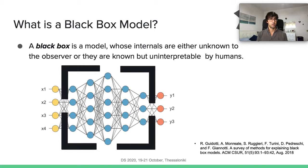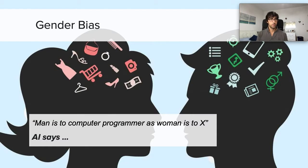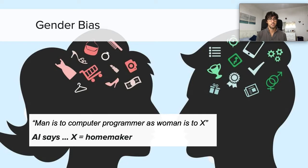This obscurity, this lack of transparency, can lead to some problems. For instance, one example is gender bias. In an experiment, using a deep neural network and a word-to-vec model, a machine was asked to complete sentences like 'man is to computer programmer as woman is to X,' and the AI said that X is homemaker. This was because the training set used by the machine was a historical set of documents where women were mostly depicted as homemakers.